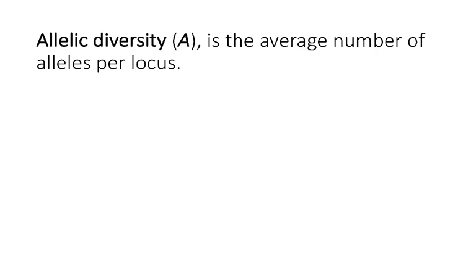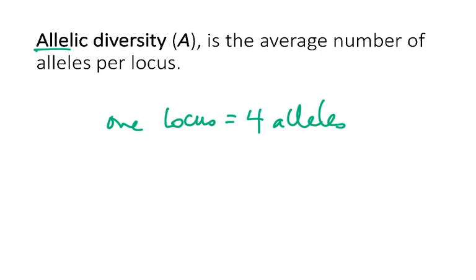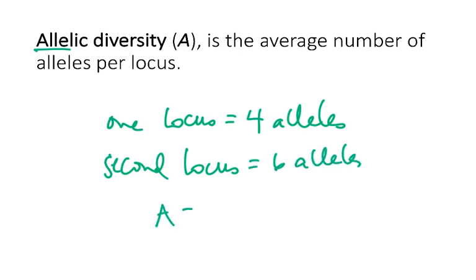First, let's start with alleles. Allelic diversity, often abbreviated as capital letter A, is the average number of alleles per locus. For example, if we had one locus that had four alleles and a second locus that had six alleles, our allelic diversity would just be the average of those — so allelic diversity would be five. This is just for you to understand roughly how these calculations are performed.